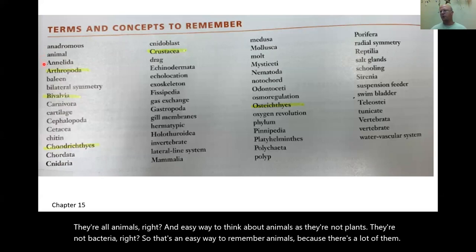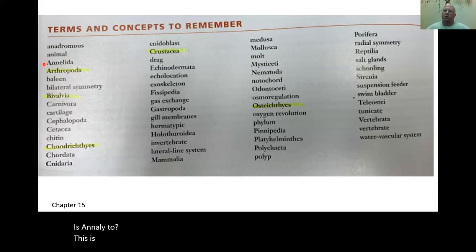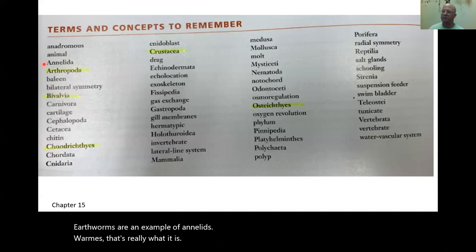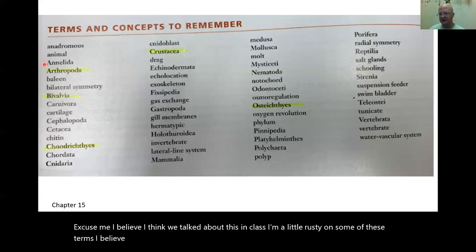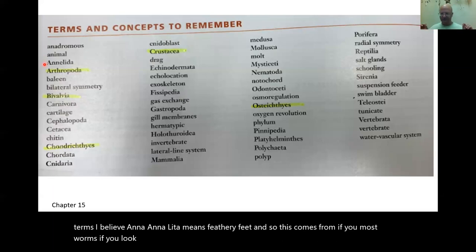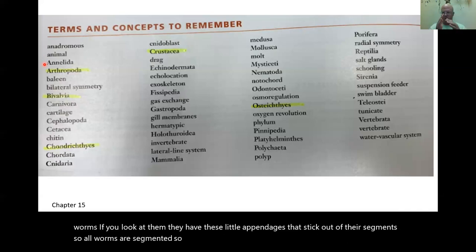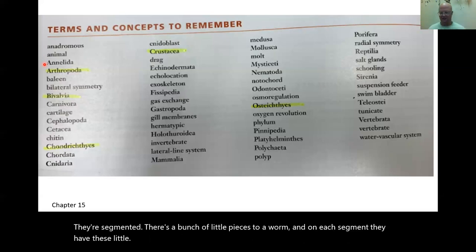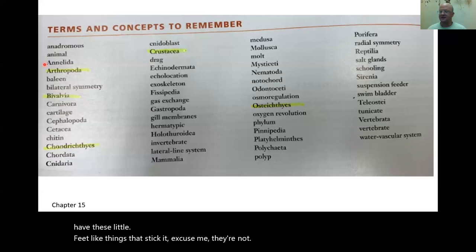The next term is Annelida, which describes the phylum for worms. We talked a lot about giant tube worms; earthworms are also an example. I believe annelida means 'feathery feet.' If you look at most worms, they have little appendages that stick out of their segments — all worms are segmented — and on each segment they have these little foot-like things. Annelids, or worms.